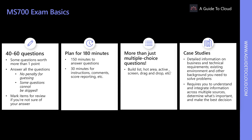When you sit for the MS700 exam, you can expect between 40 to 60 questions. Try to answer all the questions — there is no penalty for guessing. Even if you don't know a particular answer, there is no negative marking, so answer all the questions.